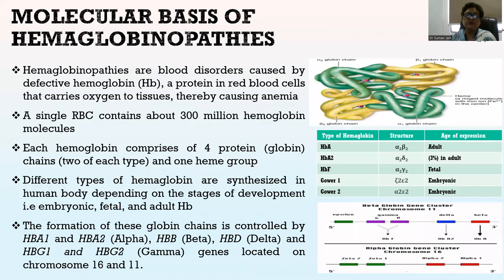Hemoglobinopathies are a single gene disorder to be discussed in detail. They are blood disorders caused by defective hemoglobin — a protein in red blood cells that carries oxygen to tissue — thereby causing anemia. A single red blood cell contains about 300 million hemoglobin molecules. Each hemoglobin molecule comprises four protein globin chains, two of each type, and one heme group. Different types of hemoglobin are synthesized depending on the stage of development — embryonic, fetal, and adult hemoglobin — controlled by HbA1, HbA2 alpha, HbB beta, HbD delta, and HbG1 and HbG2 gamma genes located on chromosomes 16 and 11.